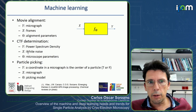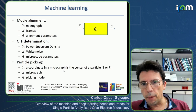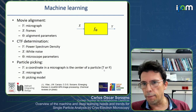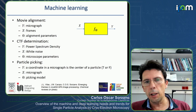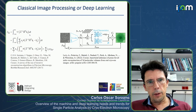If you are determining the CTF, then y is the power spectrum density, x is white noise, and theta are the microscope parameters. For particle picking, y is whether a coordinate on a micrograph is the center of a particle — a binary discrete output — x is the micrograph, and theta is a picking model. Depending on the problem, x, y, and f will be different, but the setup is almost always the same.